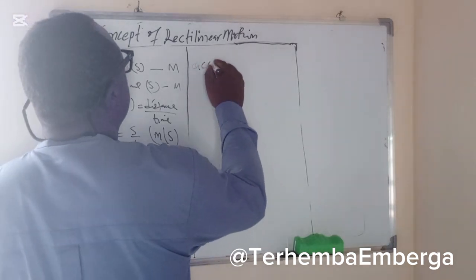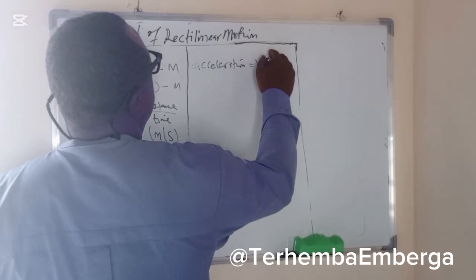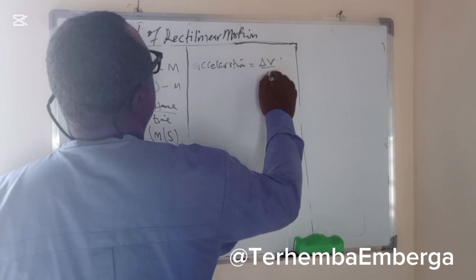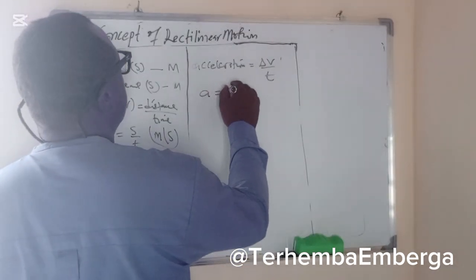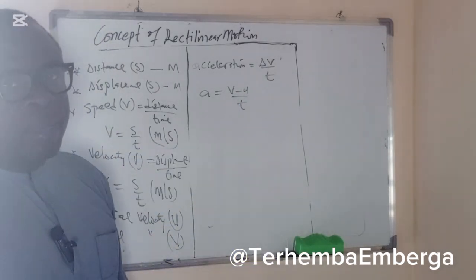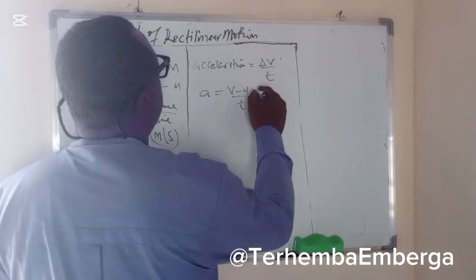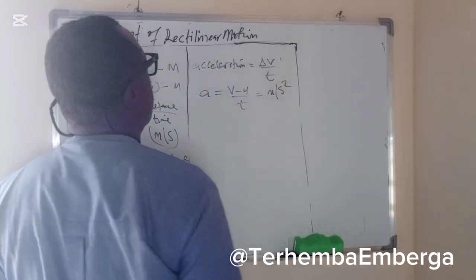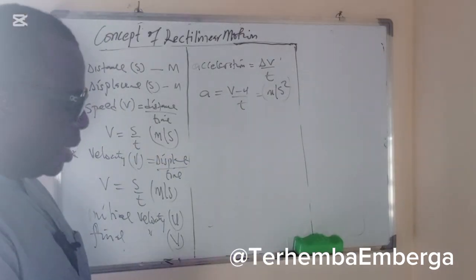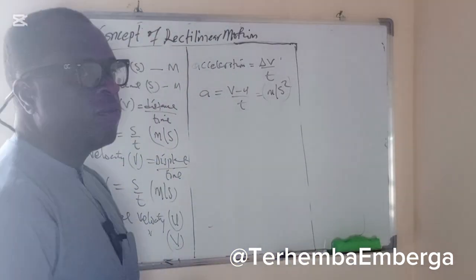We talk about acceleration. Acceleration is the change in velocity over time. So we can say that acceleration is v minus u all over t, where v minus u represents the change — the difference between the two velocities. It is measured in meters per second squared as a unit of acceleration. So one will now start wondering: how do we go about the equations of motion?